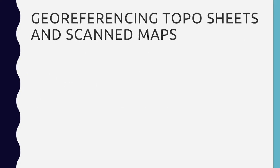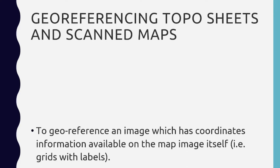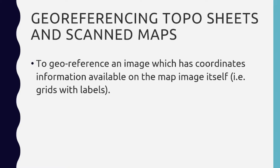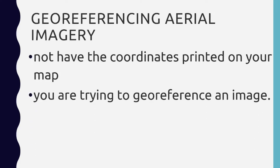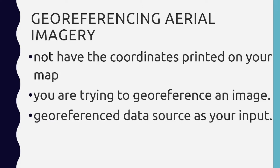This is the general procedure for georeferencing. We are going to see two parts: Part A is georeferencing topo sheets and scanned maps, where the coordinate information is available on the map image itself — we mark coordinates to find ground control points. Part B is for when you don't have coordinates printed on the map and you use an already georeferenced data source as your input.